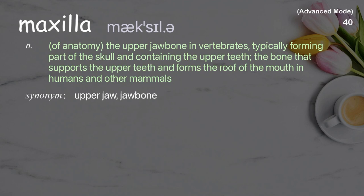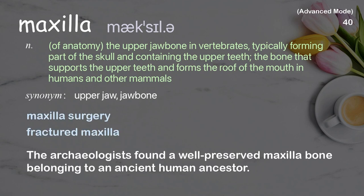Maxilla: In anatomy, the upper jawbone in vertebrates, typically forming part of the skull and containing the upper teeth; the bone that supports the upper teeth and forms the roof of the mouth in humans and other mammals. Examples: maxilla surgery, fractured maxilla. The archaeologists found a well-preserved maxilla bone belonging to an ancient human ancestor.